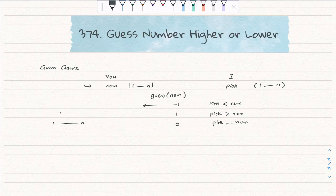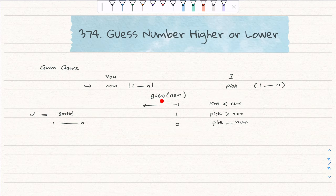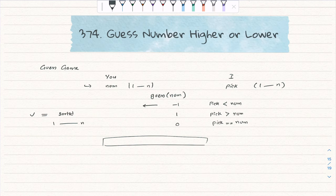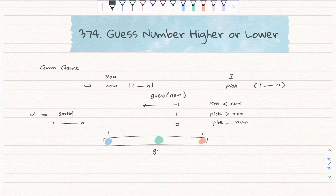If the picked number equals your guess, you get zero. We can clearly see the one-to-n range is sorted, so we can use binary search. The comparison is being done by this API, so we take the one-to-n range, set a left pointer and a right pointer, take the mid, call the guess API for mid, and based on the result — minus one, one, or zero — we decide whether to go left or go right.